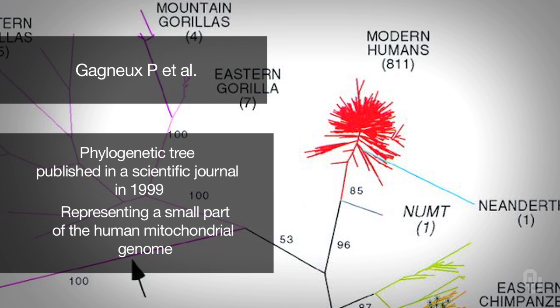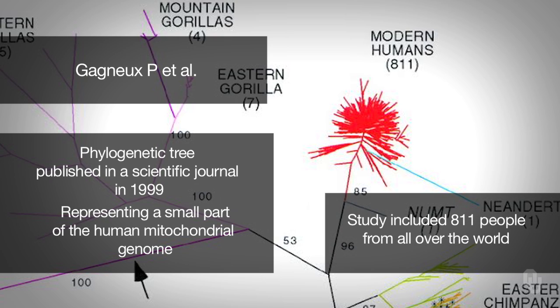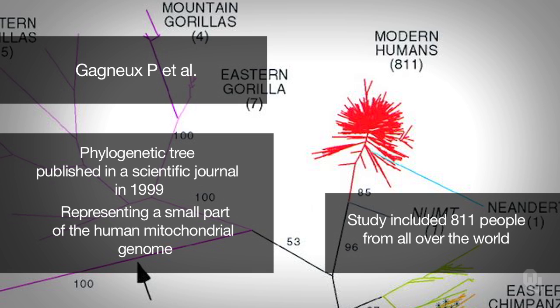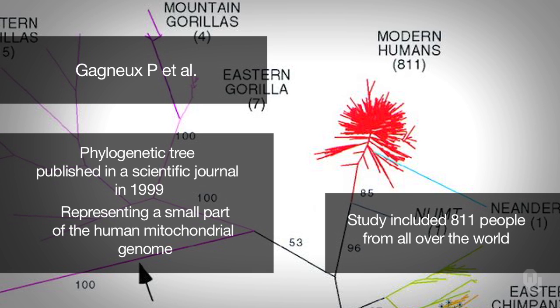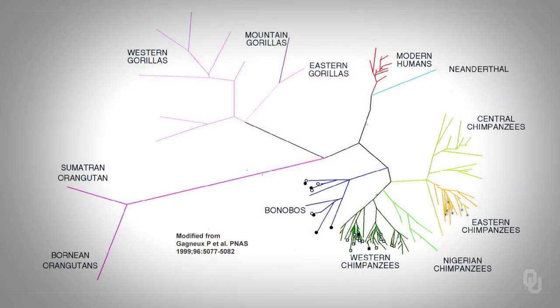The genetic data is a small area of the human mitochondrial genome, and it includes 811 people from all over the world. Even with this small data set, we can visualize these people's common mitochondrial ancestry, and deduce individuals that have a more recent common mitochondrial ancestor, and individuals that have a more distant common ancestor.